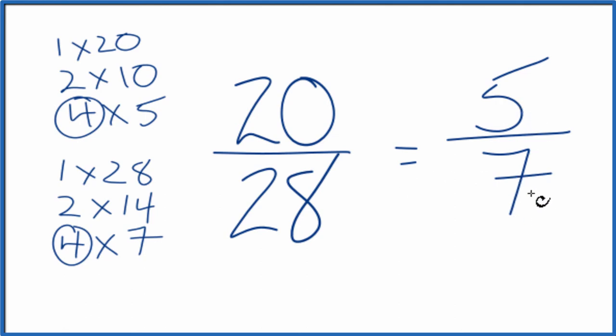We can't reduce this any further. These are equivalent fractions. If you divide 20 by 28 or 5 by 7, you'll get the same number. It's just that we've simplified or reduced 20/28 down to 5/7.